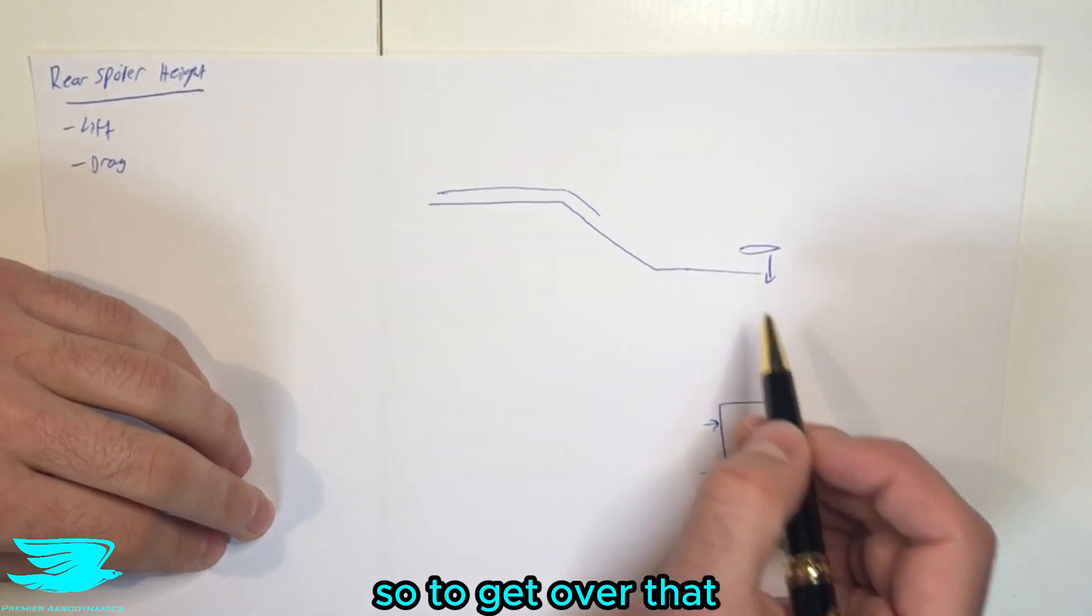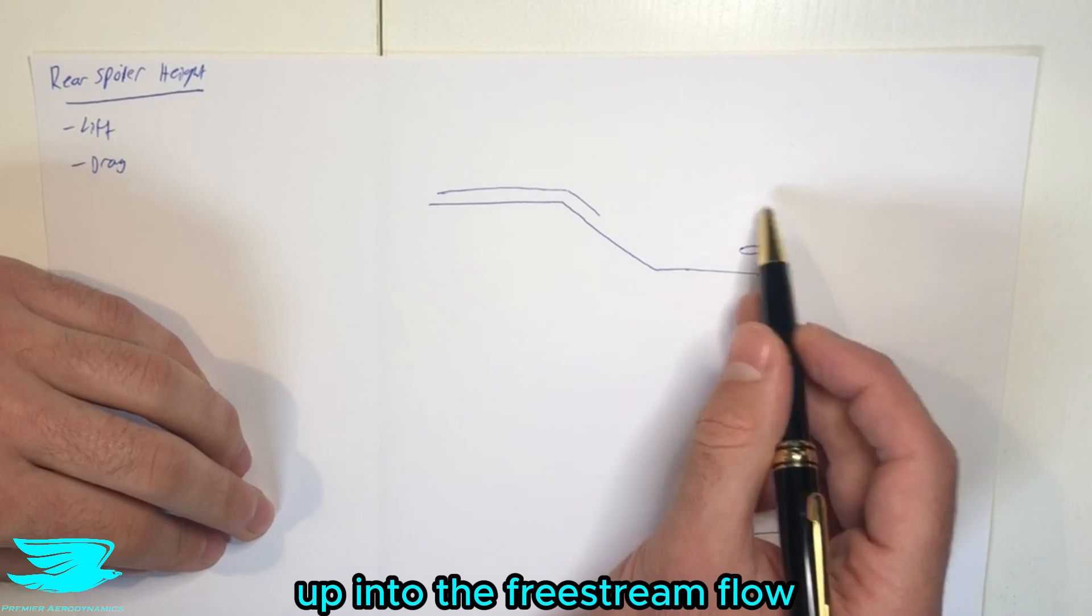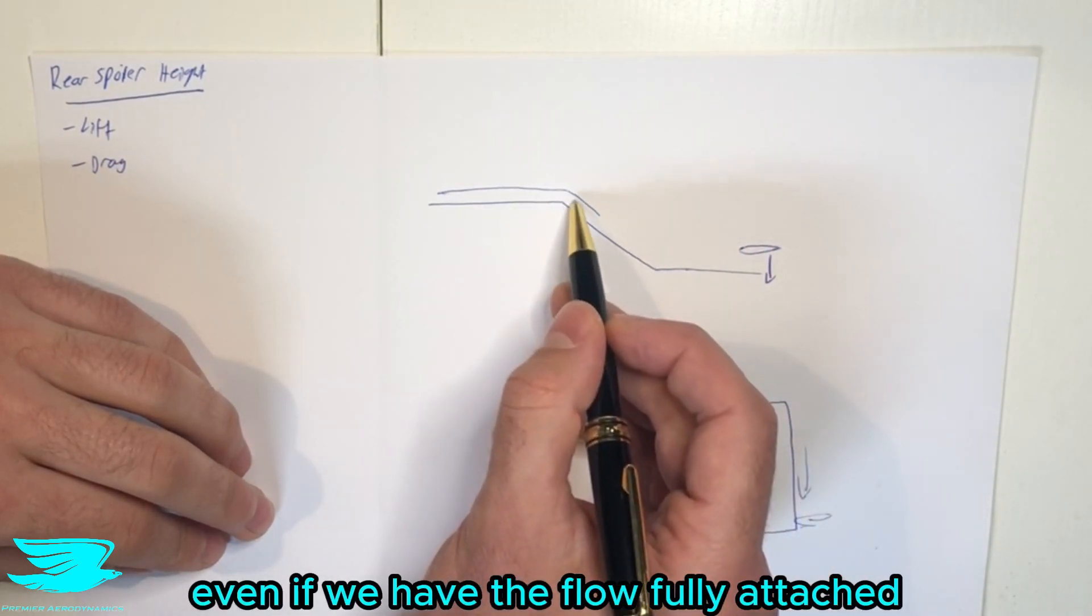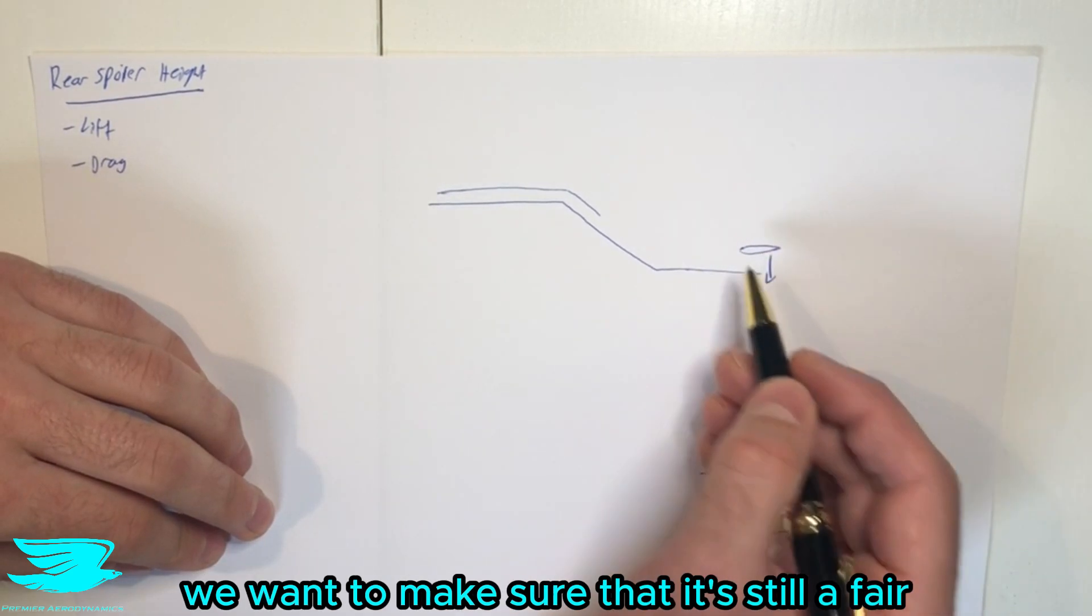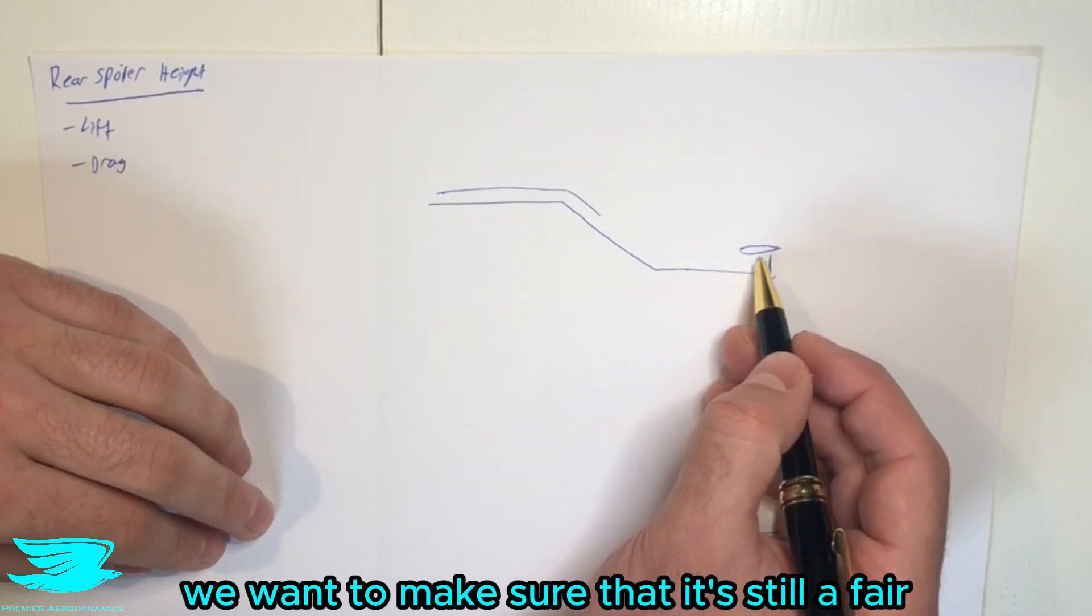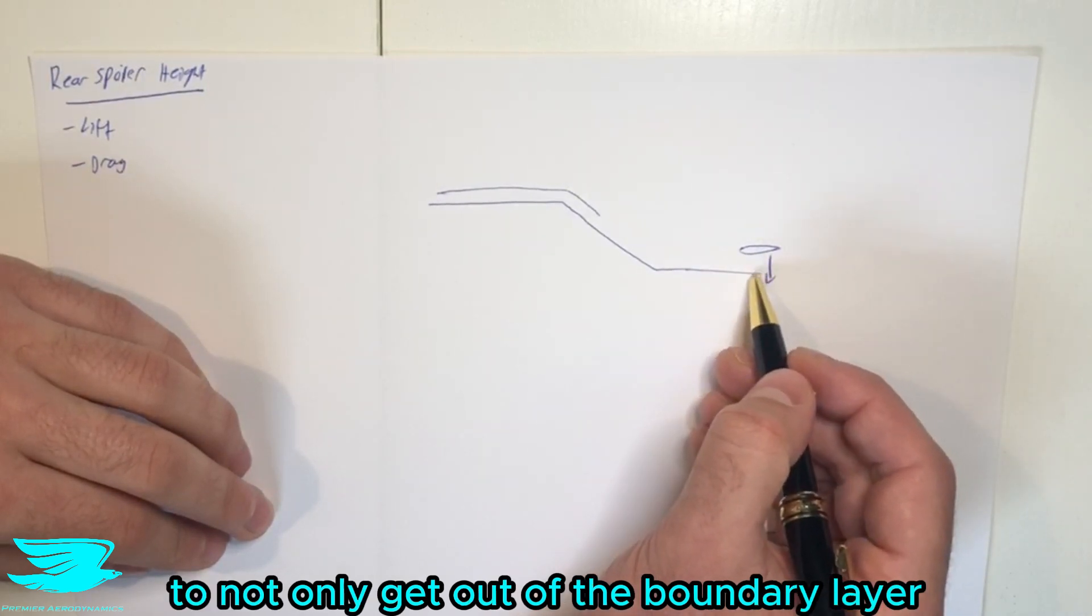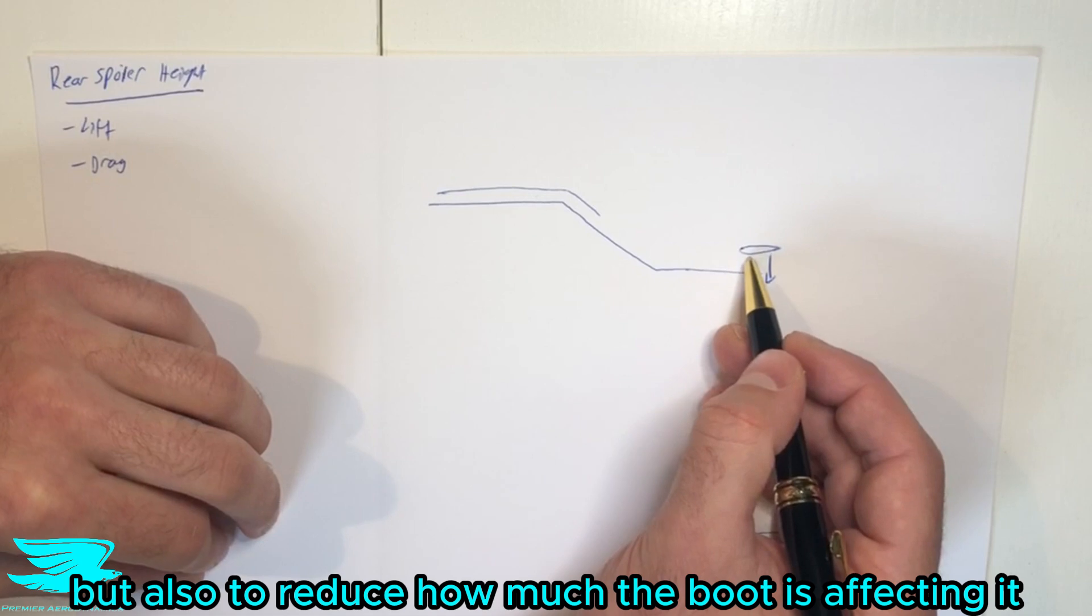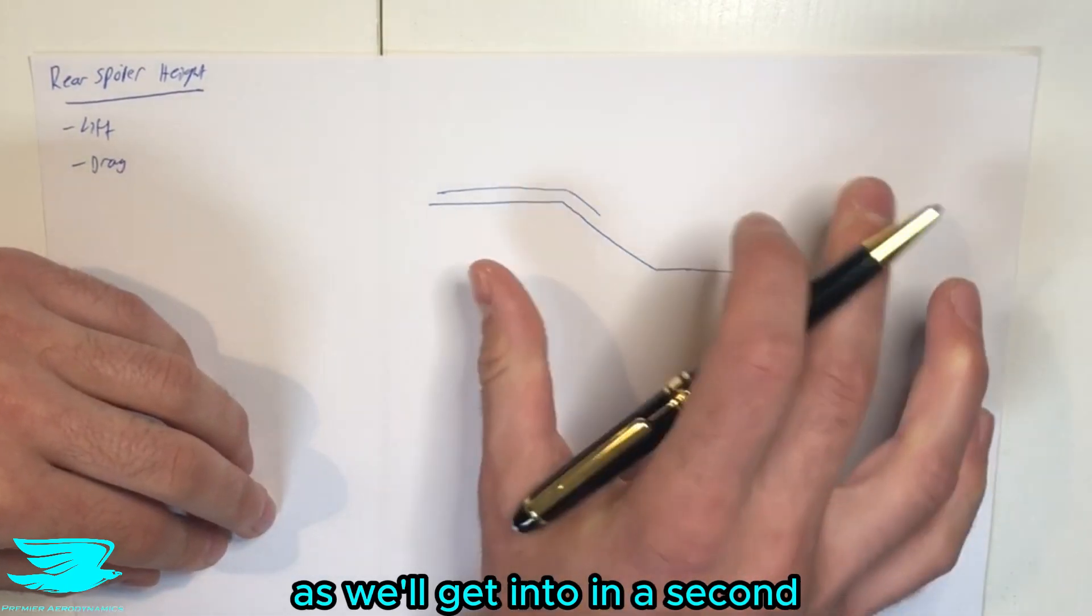So to get over that, we then have to put the spoiler higher up into the free stream flow. Even if we have the flow completely attached over the rear window and then hitting the spoiler, we want to make sure that it's still a fair amount away from the boot to not only get out of the boundary layer effect, but also reduce how much the boot is affecting it as we'll get into in a second.